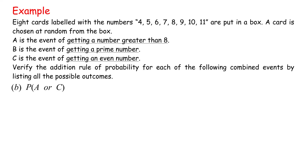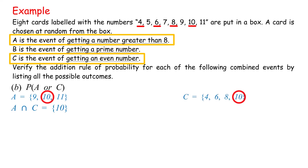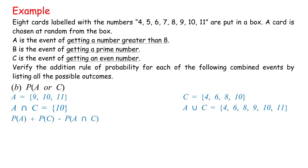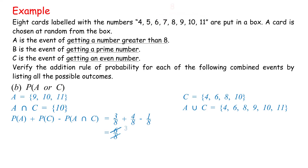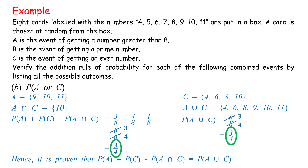B: P(A or C). A = {9, 10, 11}, C = {4, 6, 8, 10}, A intersect C = {10}, A union C = {4, 6, 8, 9, 10, 11}. P(A) plus P(C) minus P(A intersect C) equals 3 over 8 plus 4 over 8 minus 1 over 8 equals 6 over 8 equals 3 over 4. P(A union C) equals 6 over 8 equals 3 over 4. Hence, it is proven that P(A) plus P(C) minus P(A intersect C) equals P(A union C).